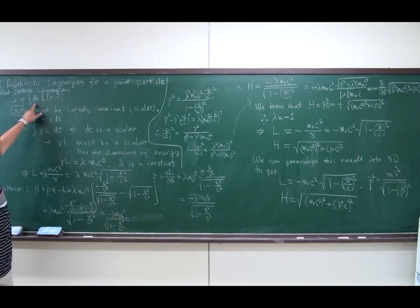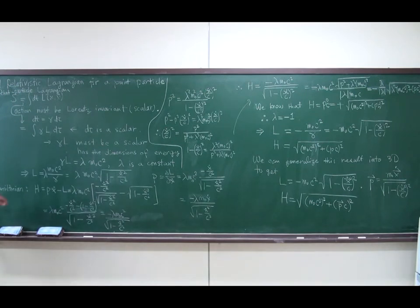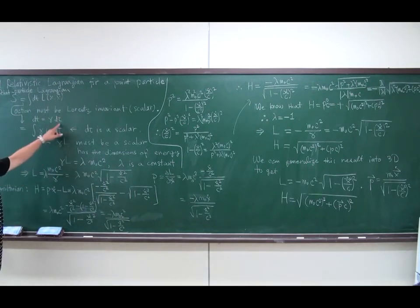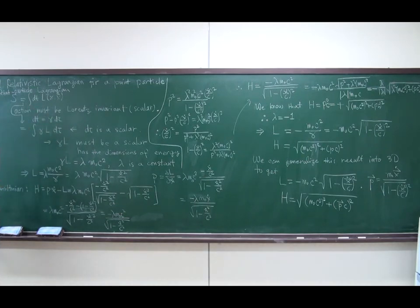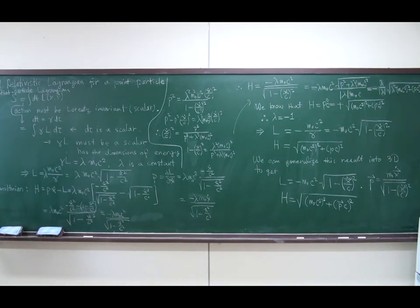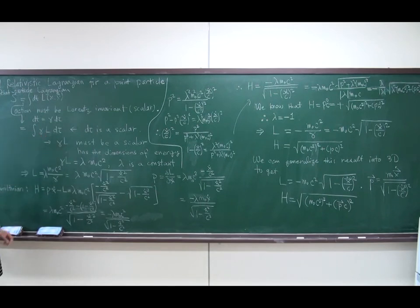Because the action is the integral of the Lagrangian with respect to time, and this time is dilated compared to the rest frame, the time in the rest frame is the proper time tau. We have dT = gamma d-tau, where gamma is the Lorentz factor. Substituting, we find that the Lagrangian multiplied by gamma, integrated over proper time, gives the action. Since the action is a Lorentz scalar and d-tau is also a Lorentz scalar, gamma·L must be a Lorentz scalar.